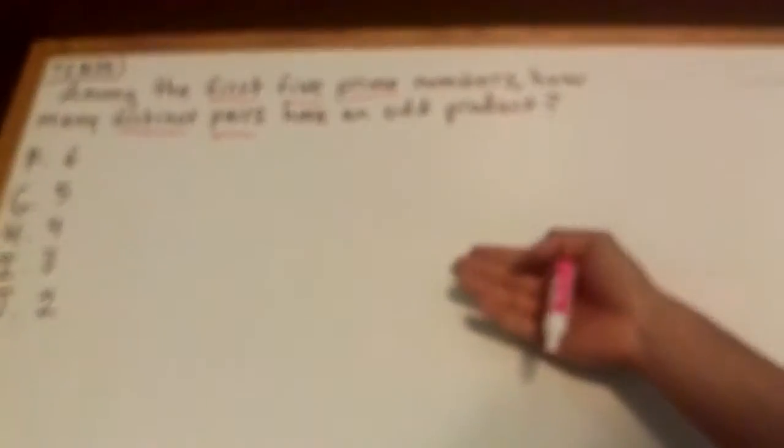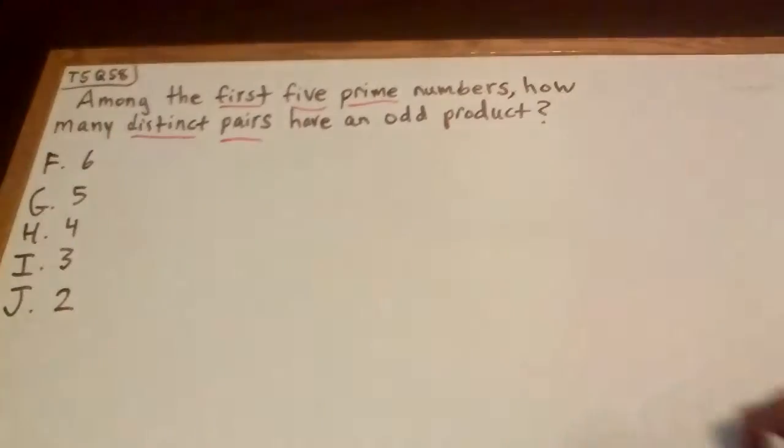Let's go ahead and do that. Among the first five, the first five prime—every single one of those words is important. And then it says how many distinct pairs have an odd product. It doesn't say consecutive pairs, it says distinct pairs. First five prime numbers.